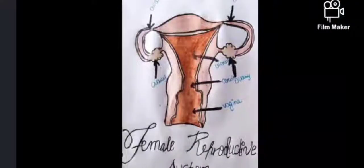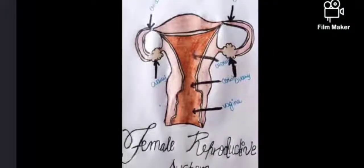At the upper end it receives the oviducts from either side, while the lower end opens into the vaginal canal that opens to the outside. The uterus is the site of implantation.